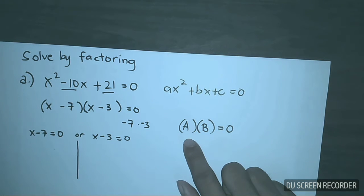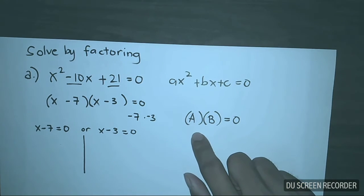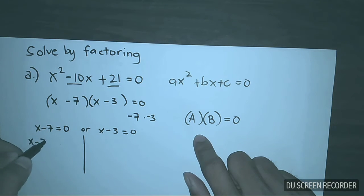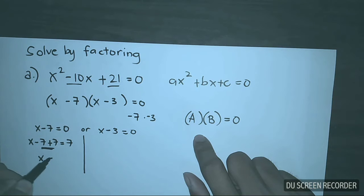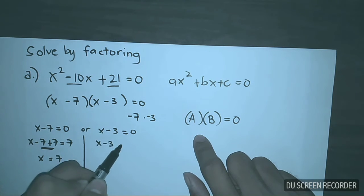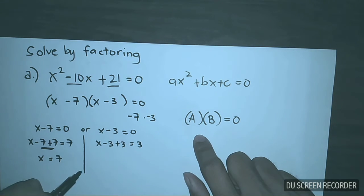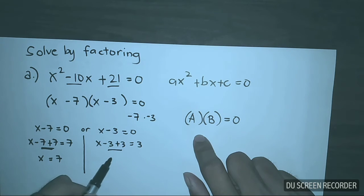Let's solve for the first value of x. x minus 7 plus 7 is equal to 7, so x is equal to 7. On the other side, x minus 3 plus 3 is equal to 3. Negative 3 plus 3 is equal to 0, so x is equal to 3.